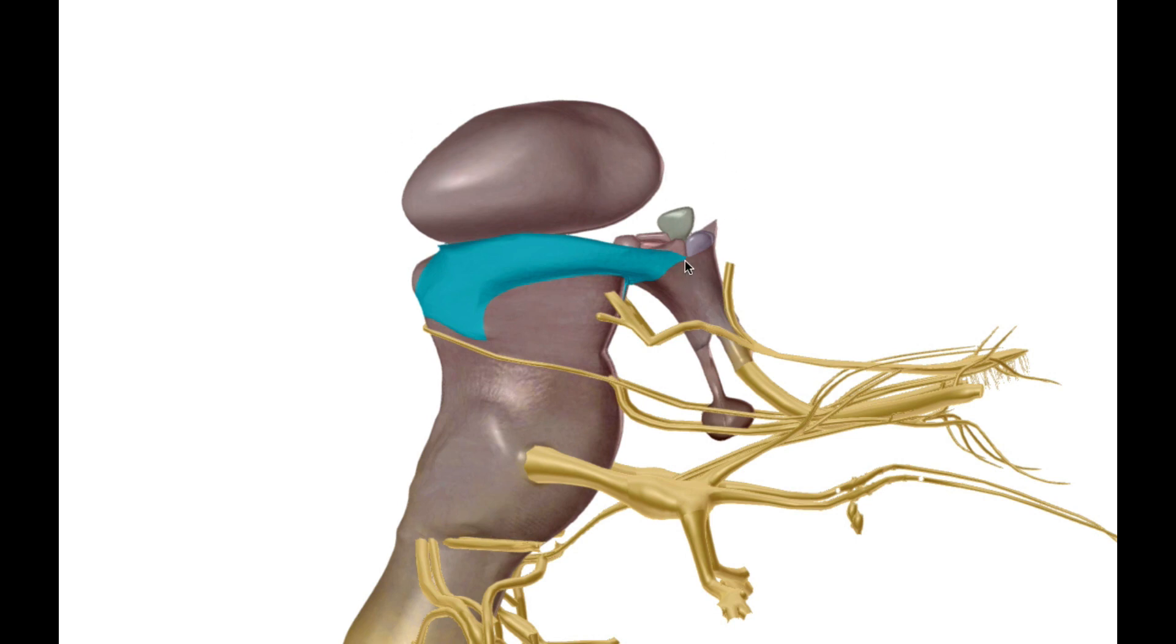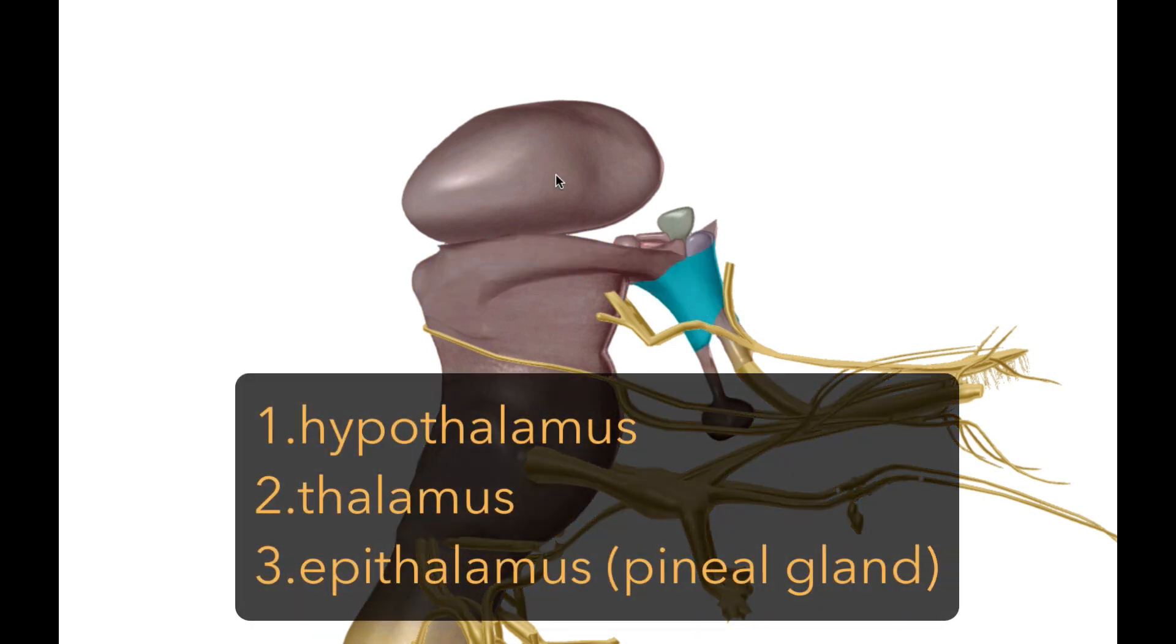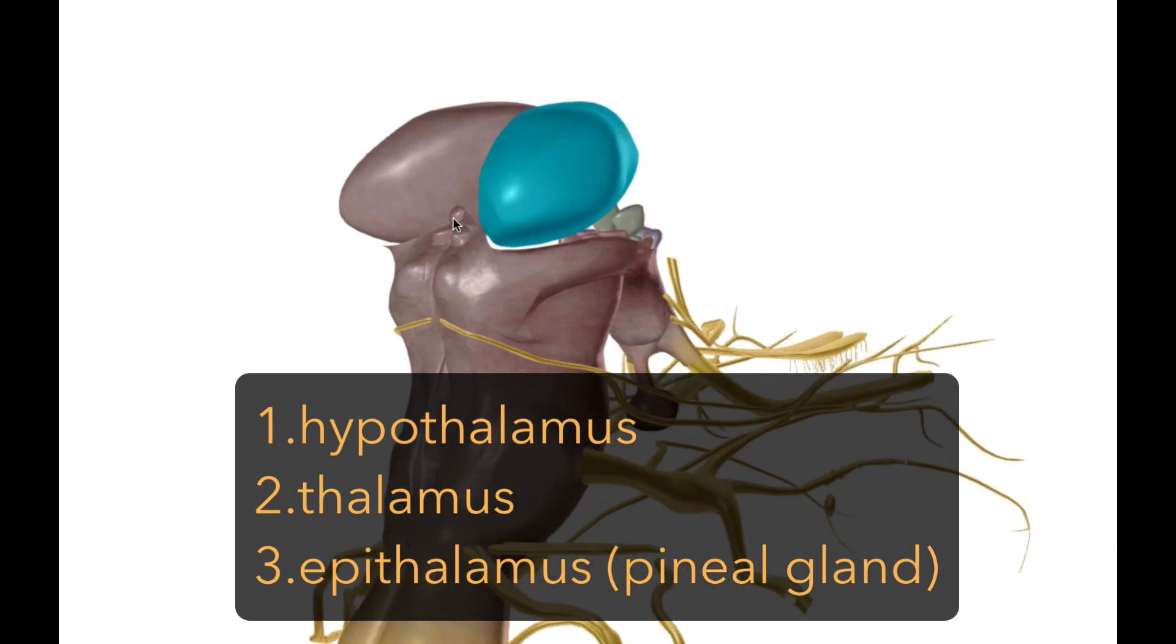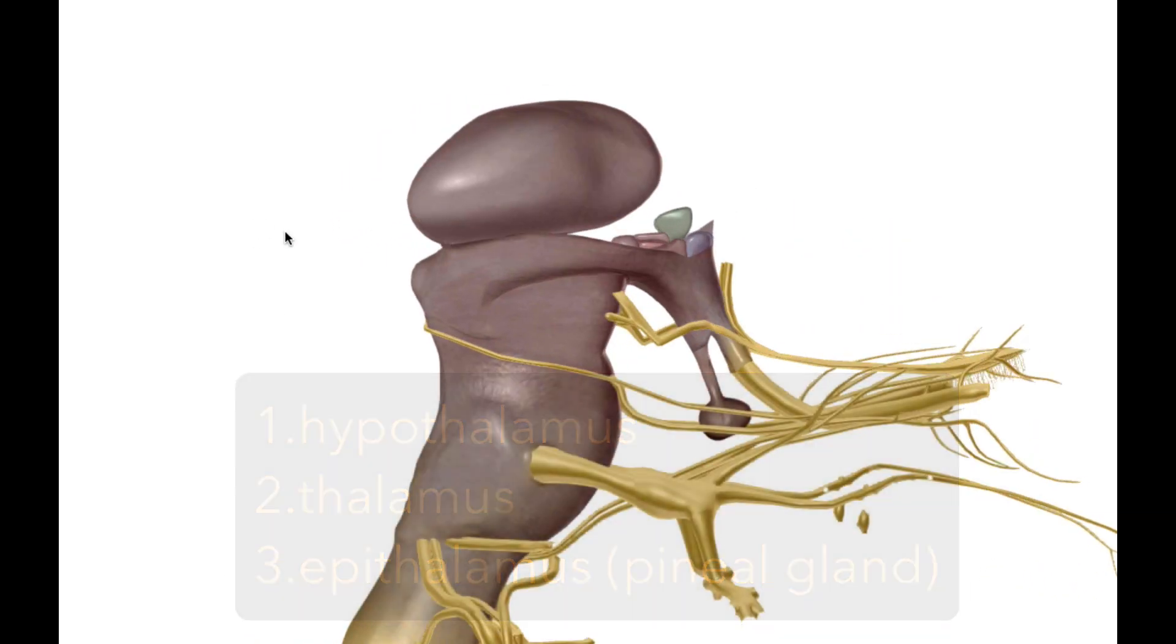The diencephalon is three structures that we're going to discuss: number one, the hypothalamus, the most anterior, and in the middle we have the thalamus, and then on the posterior we have the pineal gland. So just to kind of get some perspective on this, keep in mind as mentioned before in other lectures.